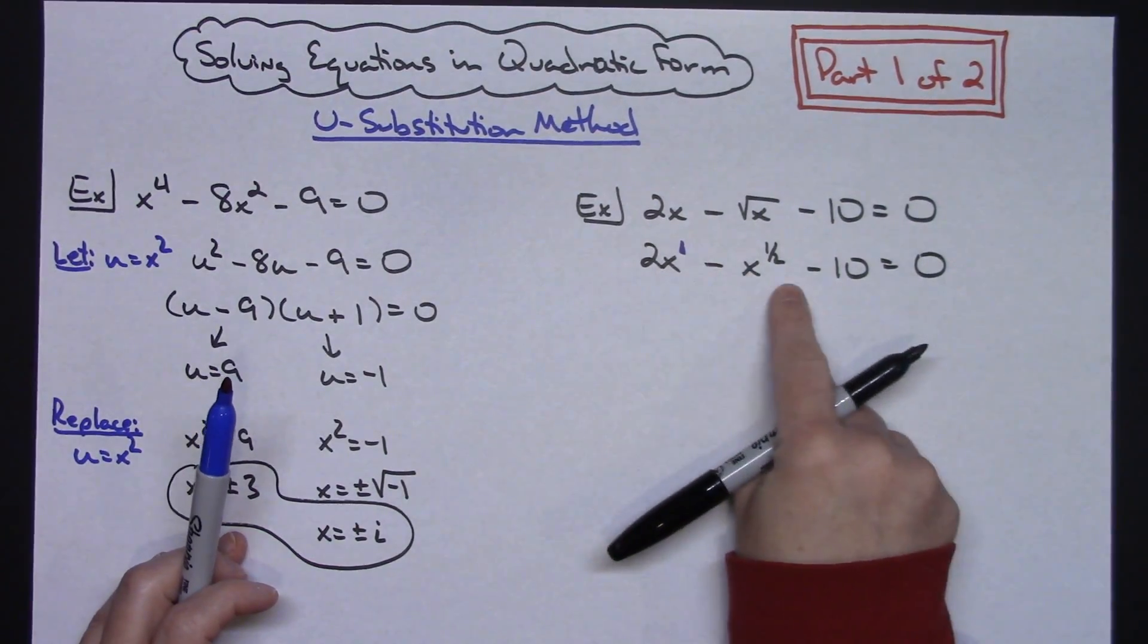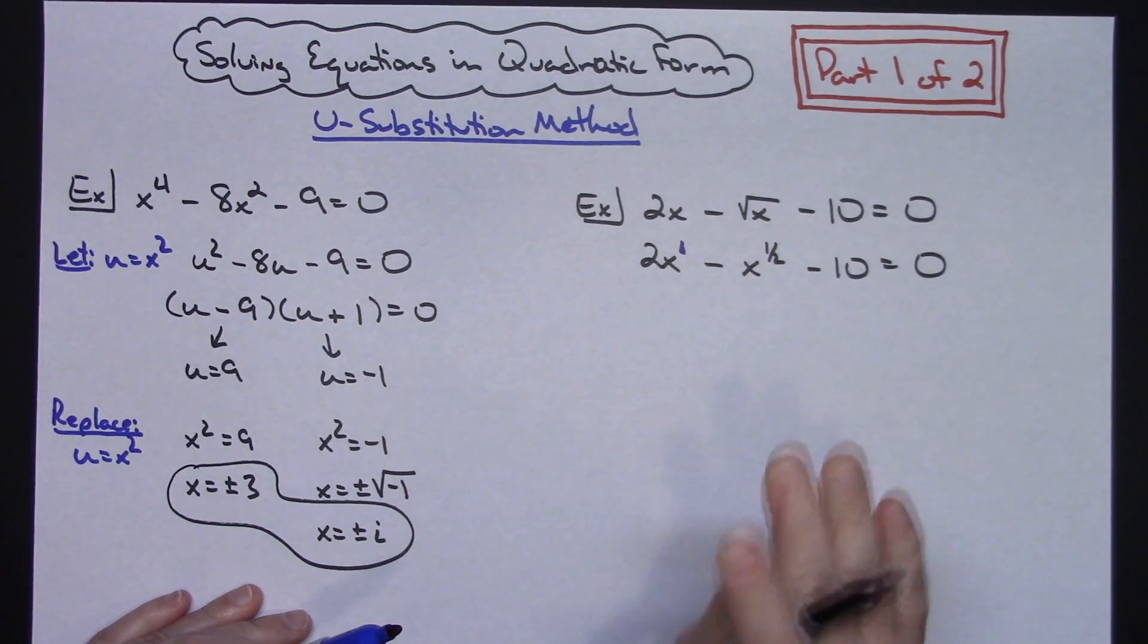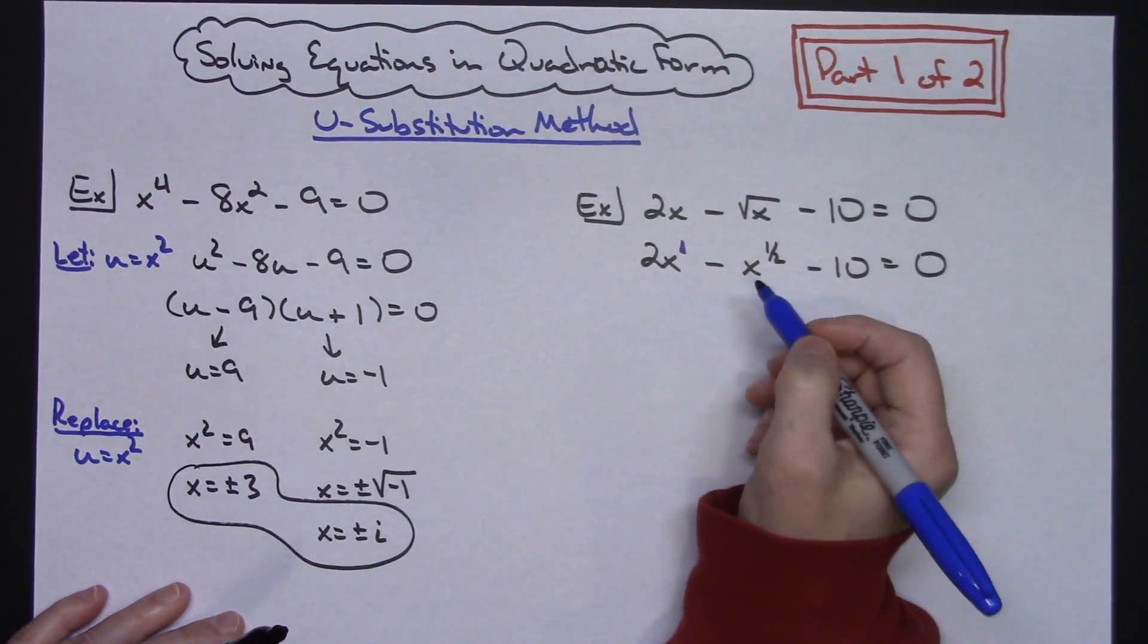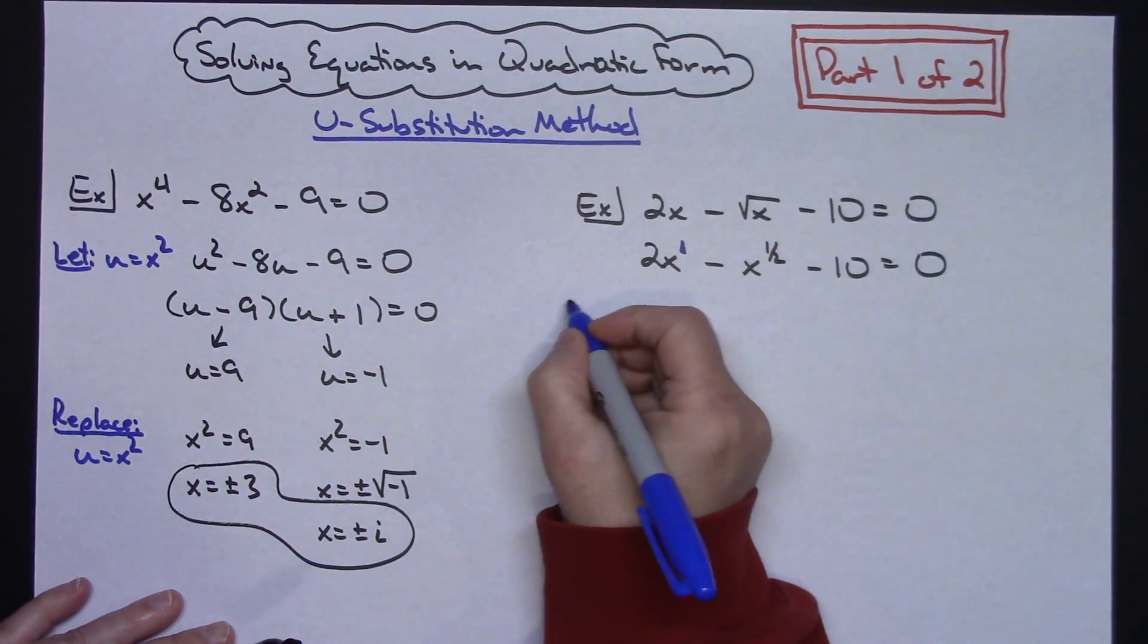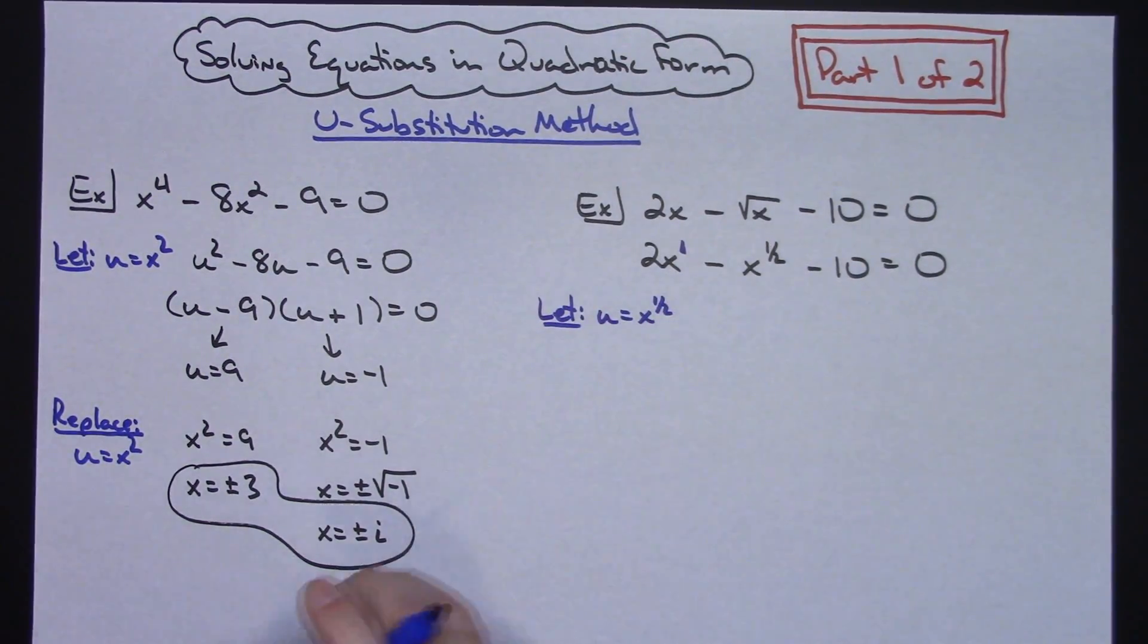Now you can real easily see there, 1/2 for your exponent here, 1 for your exponent here. It's going to work really nice. So I am going to start off by letting u be the middle variable term there. So I'm going to let u = x^(1/2).